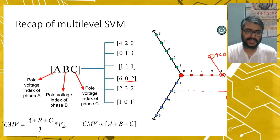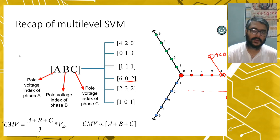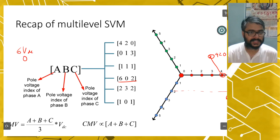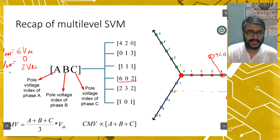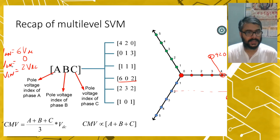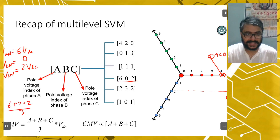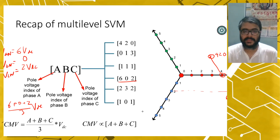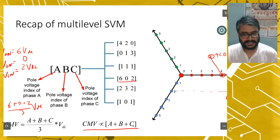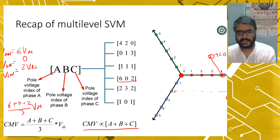CMV — in the vector 6,0,2 for example — means the output pole voltage of phase A is 6·Vdc, phase B is 0, and phase C is 2·Vdc. So VAN plus VBN plus VCN divided by 3 equals (A plus B plus C) divided by 3 times Vdc. This means CMV varies as A plus B plus C. If A plus B plus C is constant, your CMV will be constant. This is the key relationship to remember.